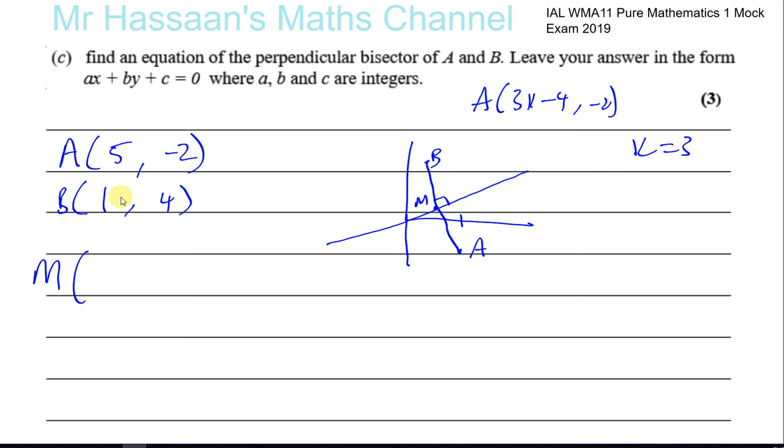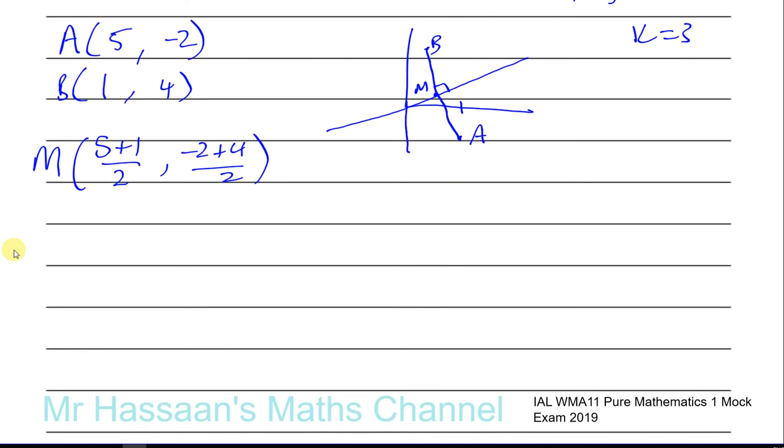So we need to find two things. We need to find the midpoint between the two points. And that's basically very simple. It's going to be the average of the x coordinates for the x-coordinate of the midpoint and the average of the y-coordinates of these two points for the y-coordinate of the midpoint. So we're going to have 5 + 1 divided by 2. That's the x-coordinate of the midpoint. And you've got -2 + 4 divided by 2. That will be the y-coordinate of the midpoint. So the midpoint will be, that's 6 over 2, which is 3. And 4 - 2, which is 2 over 2, which is 1. So that's the midpoint.